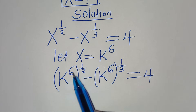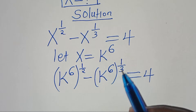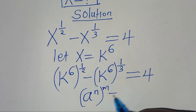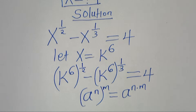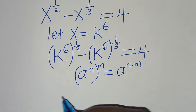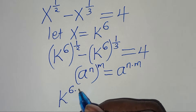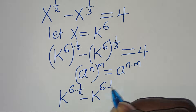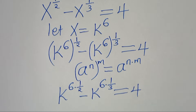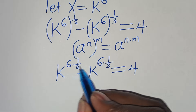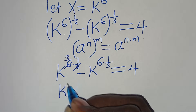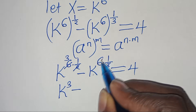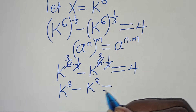Now, we have that k to the power of 6, raised to the power of a half, and k to the power of 6, raised to the power of 1 over 3. This is in the form of a to the power of n, raised to the power of m, which we can express as a to the power of n multiplied by m. Applying this exponent property, we have k to the power of 6 multiplied by a half, minus k to the power of 6 multiplied by 1 over 3, equals 4. So, 6 divided by 2 is 3, giving k to the power of 3, minus — and 6 divided by 3 is 2 — k to the power of 2, equal to 4.